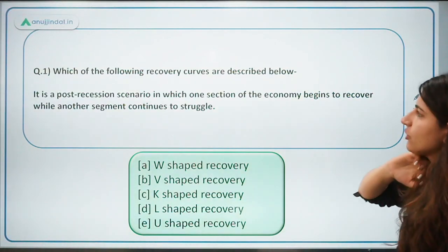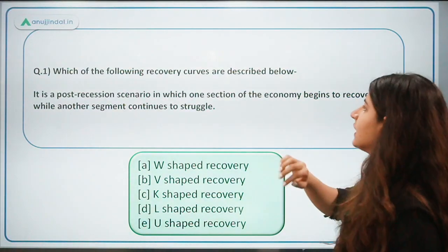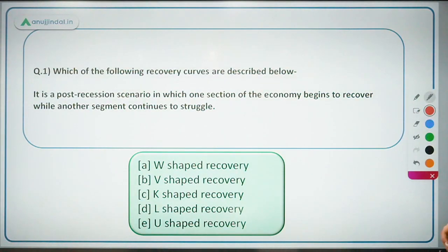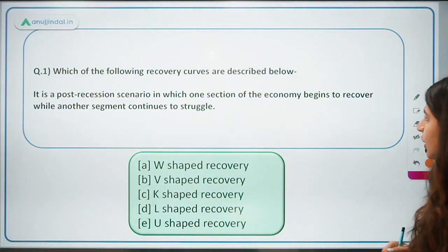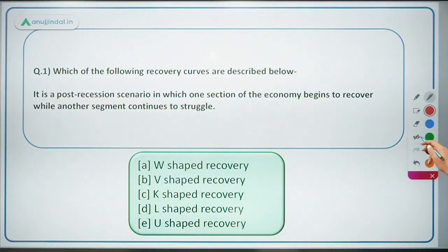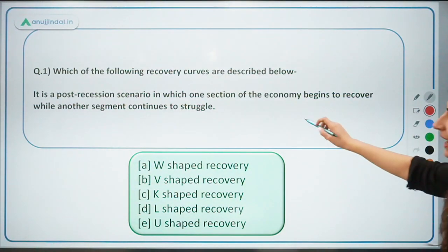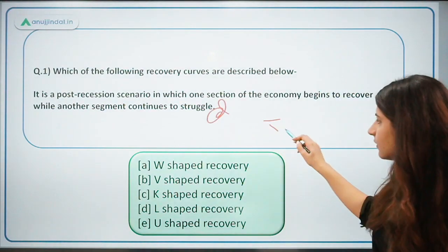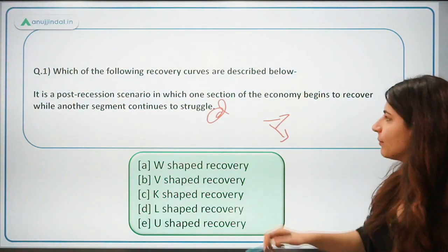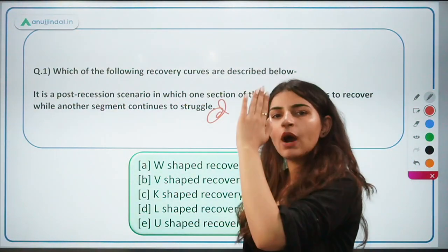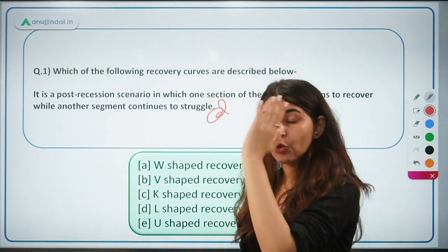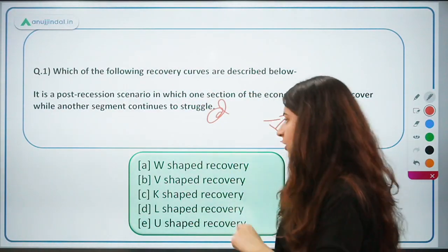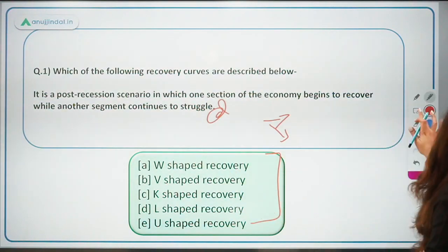MCQ Question 1: Which of the following recovery curves is described below? 'It is a post-recession scenario in which one section of the economy begins to recover while another segment continues to struggle.' So two sectors are described — one grows and the other contracts. You will tell me the answer in the comments.